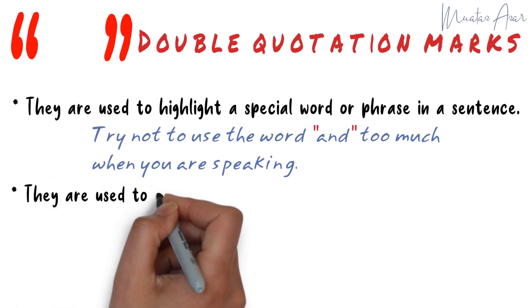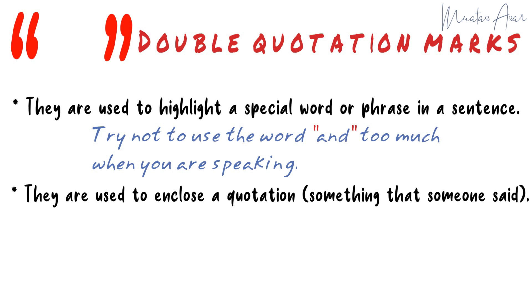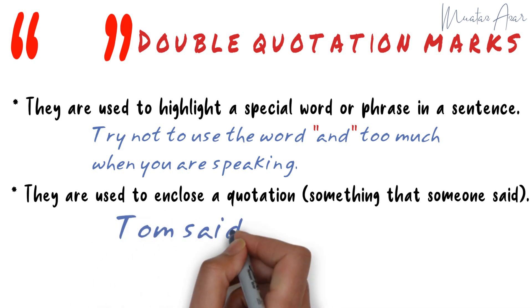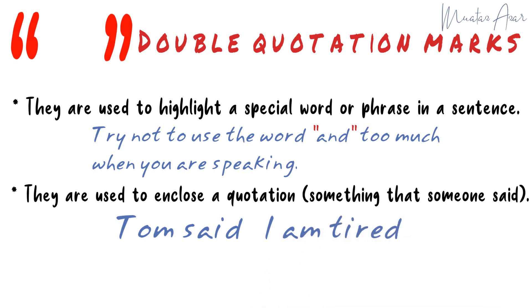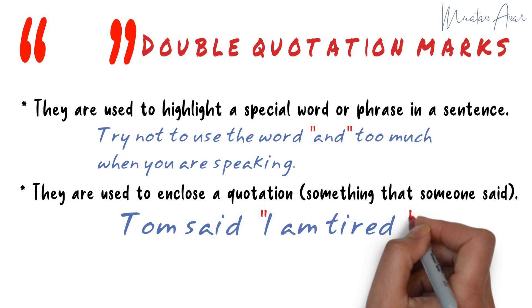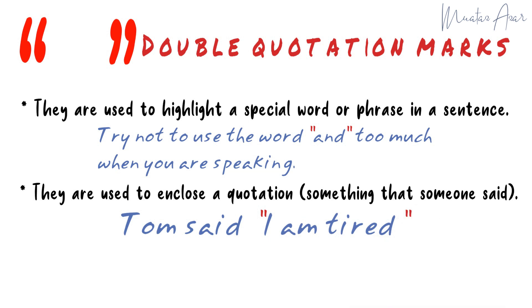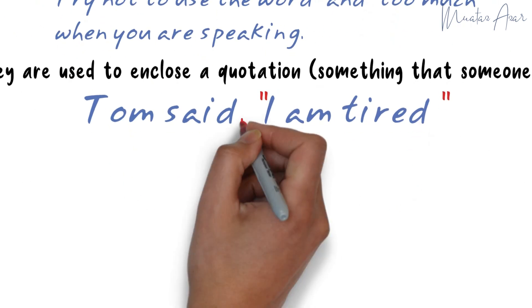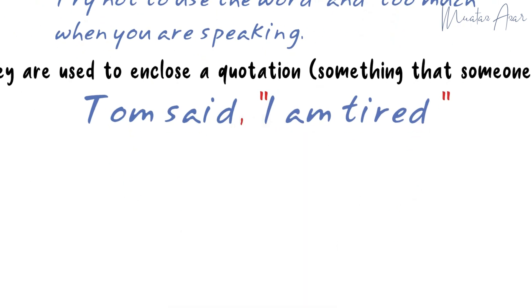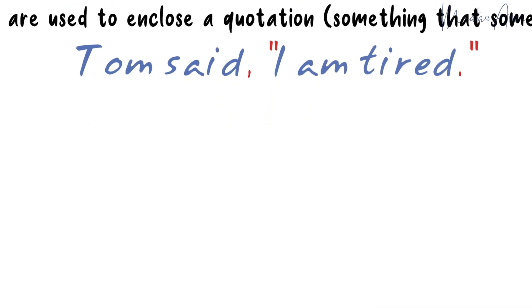They are used to enclose a quotation or something someone said. For example: Tom said, "I am tired." Here we start with the attribution followed by a comma, then we put what they said between quotation marks. We keep the punctuation — be it a period, a question mark, or an exclamation mark — inside the quotation marks.